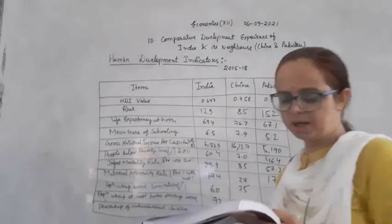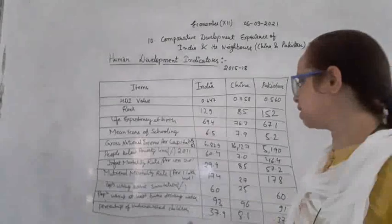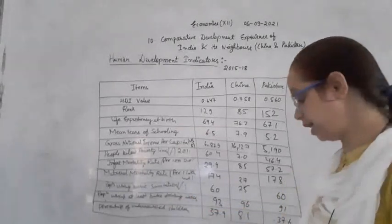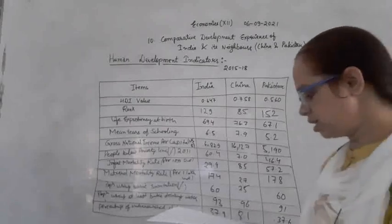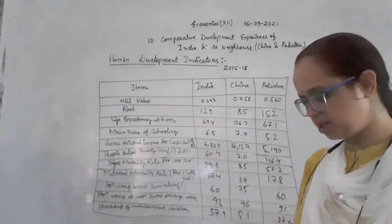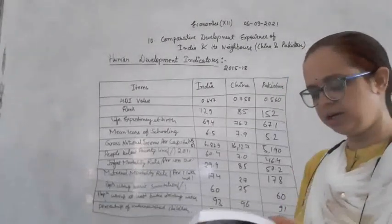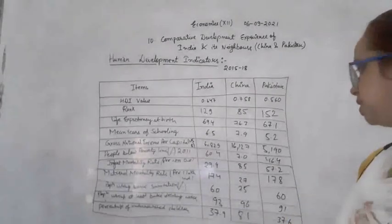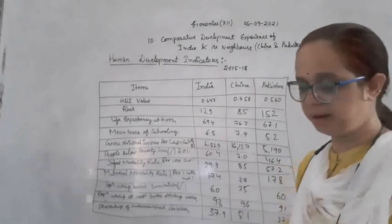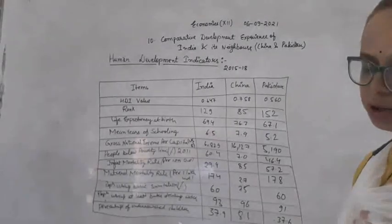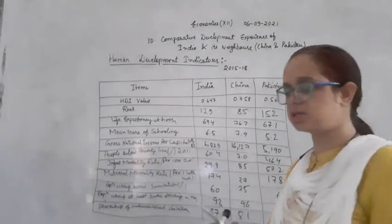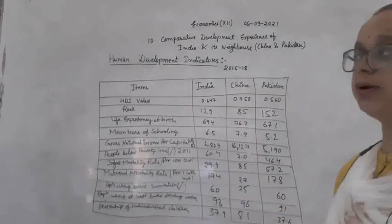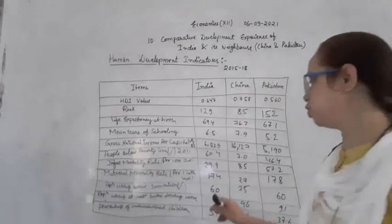Next is access to basic sanitation for the population. India's ability to provide basic sanitation facilities is less than China. India has been able to provide sanitation facilities to about 60% of its population.